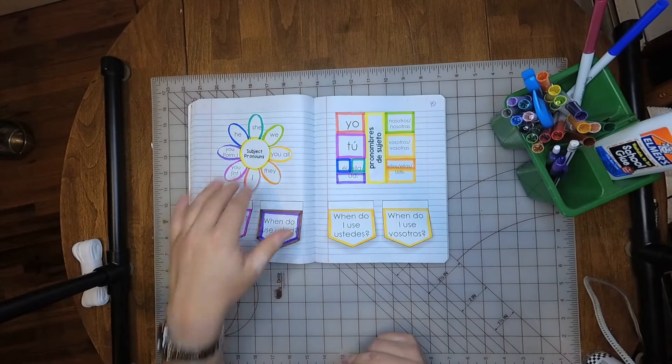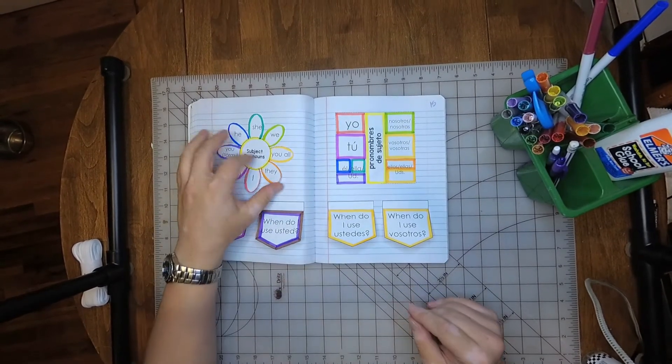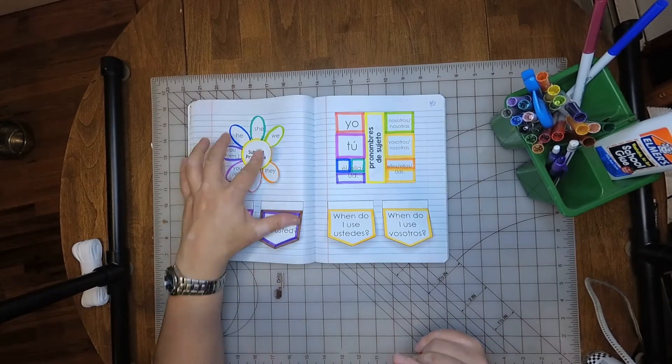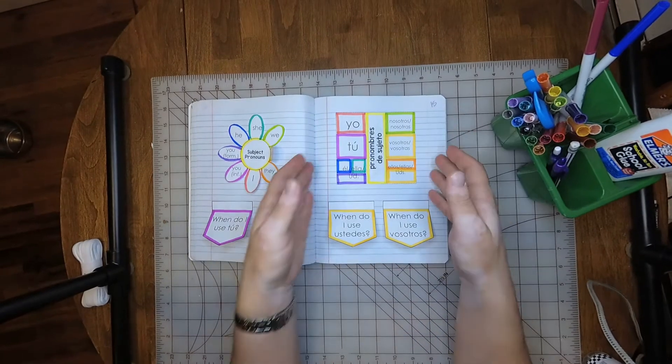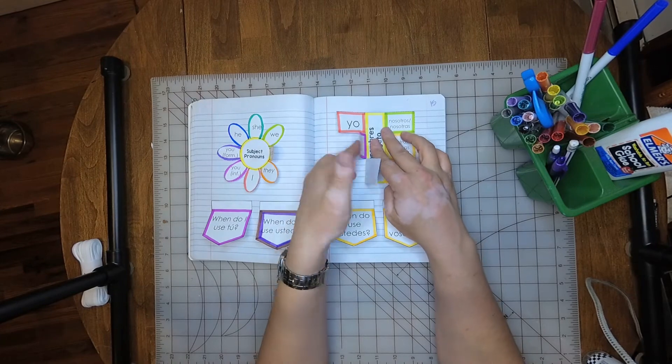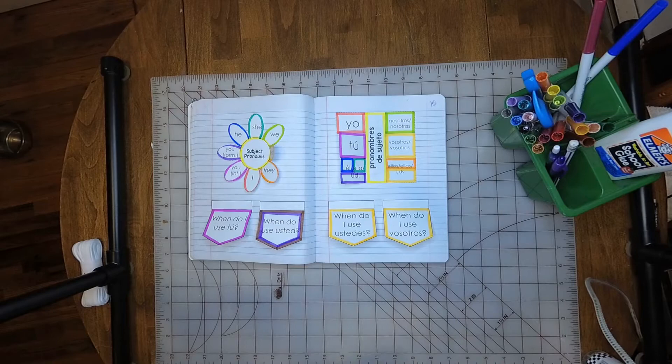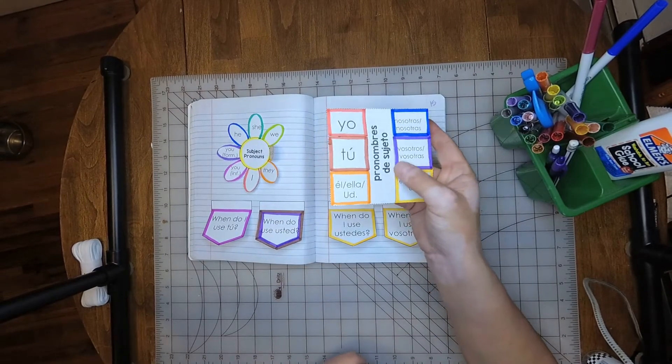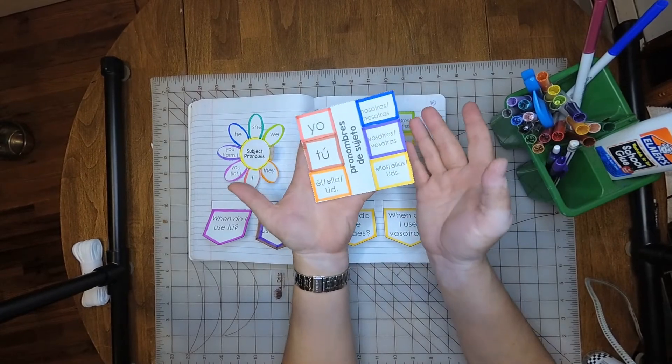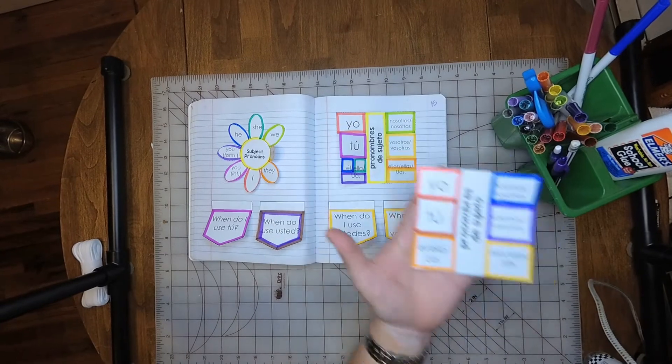Now that everything is glued down, you'll have a whole bunch of flaps. You'll have petals on this flower as you only glued down the center, and you'll have these six flaps on the pronombres de sujeto. At first I colored this like this and cut it apart, but I decided to color it a little bit differently, and I'm going to explain why right now.